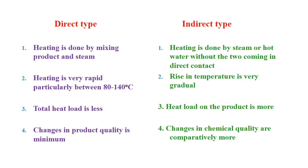Here we will see a comparison between direct and indirect type. In the direct type, heating is done by mixing the product and steam, whereas in indirect type, heating is done by steam or hot water without direct contact. Heating is very rapid, particularly between 80 to 140 degrees Celsius, in direct type, whereas the rise in temperature is very gradual in indirect type. The total heat load is less in direct type whereas heat load on the product is more in indirect type. Finally, changes in product quality are minimum in direct type, whereas chemical quality changes are comparatively more in indirect heating.